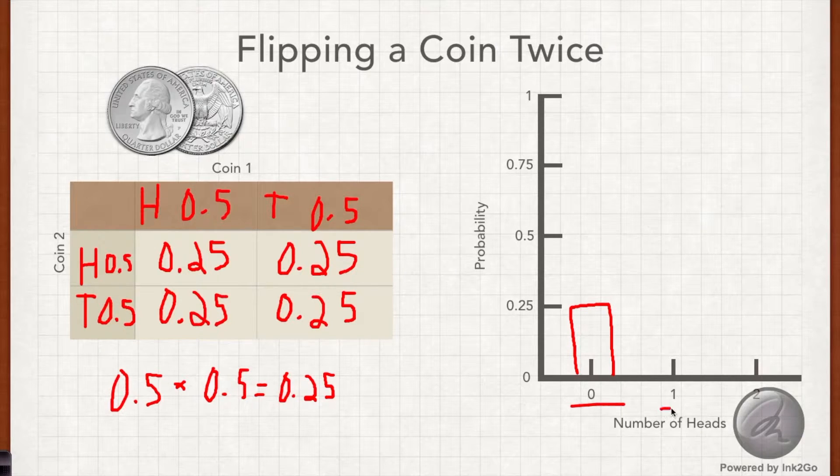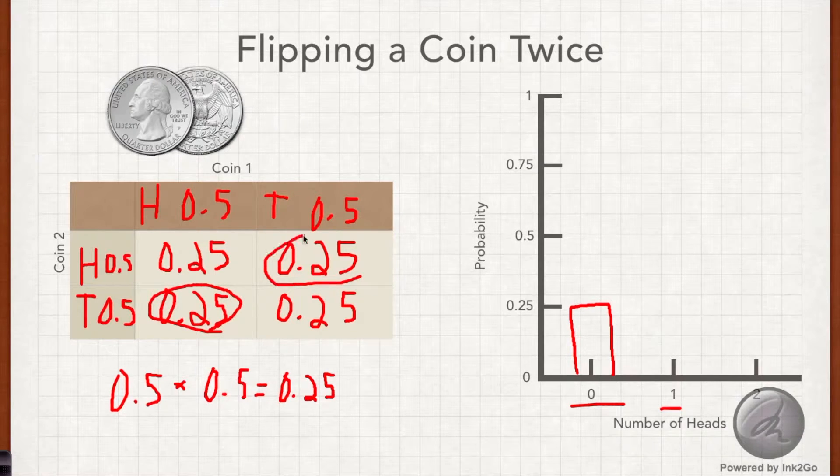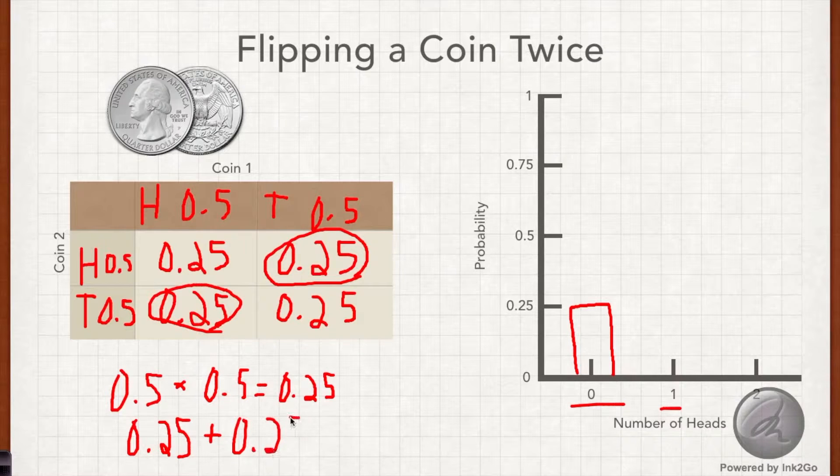How could I get one head? Well, I could get coin 1 as heads and coin 2 as tails, so this. Or coin 1 could be tails and coin 2 could be heads, right here. So we remember from the addition rule of probability that when there are two options, one thing A or thing B could happen, the likelihood is the sum of their probabilities. So 0.25 plus 0.25 is 0.5, and that is the probability of getting exactly one head.